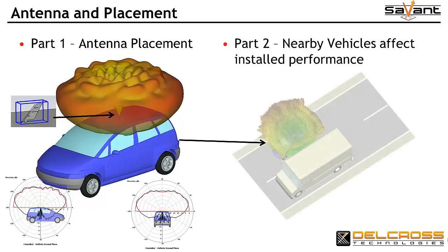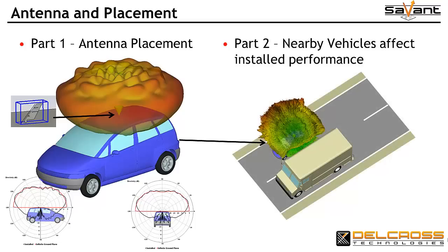In the Part 2 video, we used Savant to show how the antenna's installed performance was affected by another nearby vehicle on the roadway. We animated this scenario to demonstrate how the pattern changes as a van approaches and passes our sedan, showing both shadowing and multipath reinforcement.